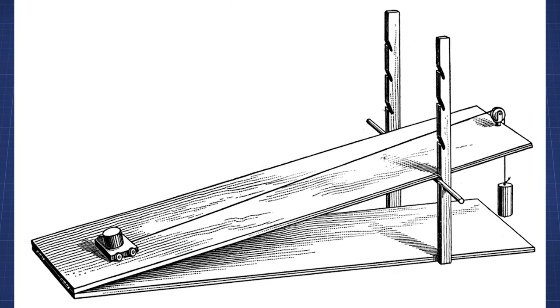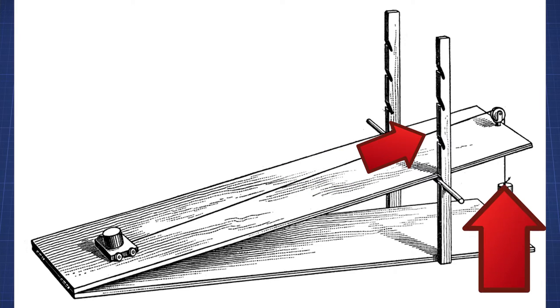An incline plane is simply a ramp. It's a flat surface that's set at an angle and it has no moving parts. You can lift a load easier just by pushing it up an angled ramp instead of lifting it straight up.